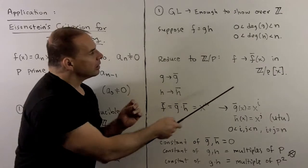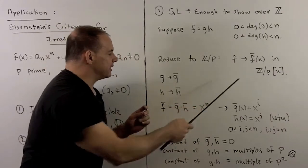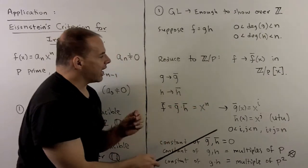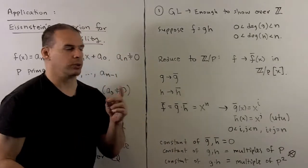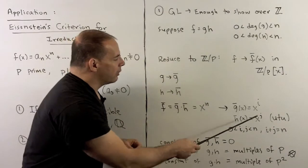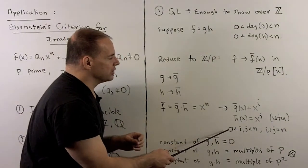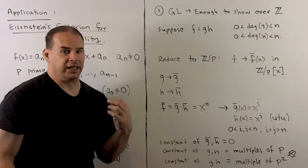Now, Z mod p adjoin x is UFD, so we could factor this as ḡ is some x to the i, h̄ is some x to the j, up to units, and we have that i and j are strictly between 0 and n, i plus j equals n.